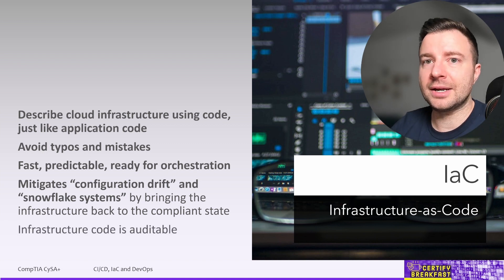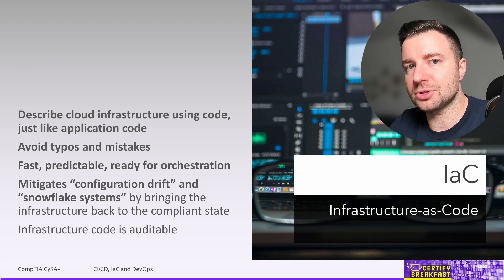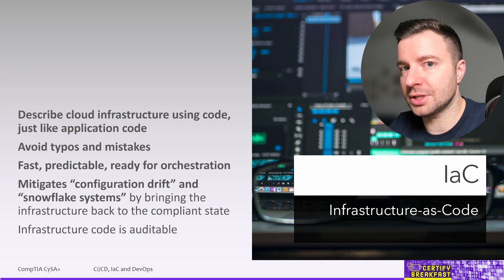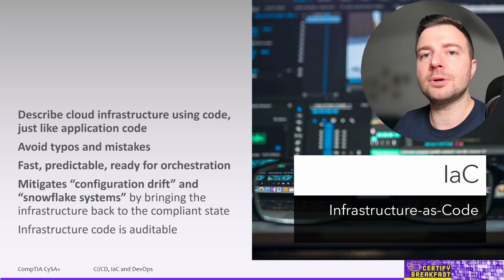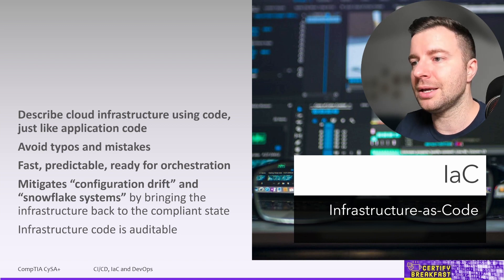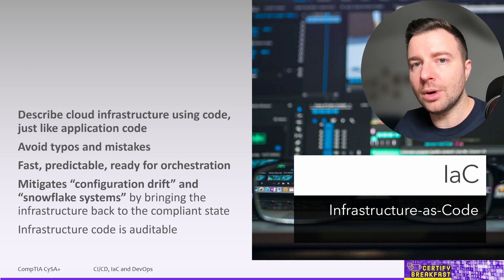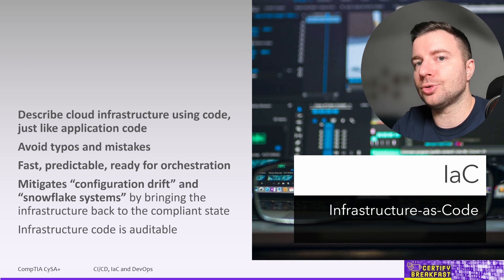IaC also serves as an auditing method. The code that describes your infrastructure can be used as the source of an infrastructure audit or a security audit, because everything is already in there — not just the infrastructure, but the security policies, the permissions, any access lists that you might have configured. They're all in one configuration file, which will be the source for your security audit.